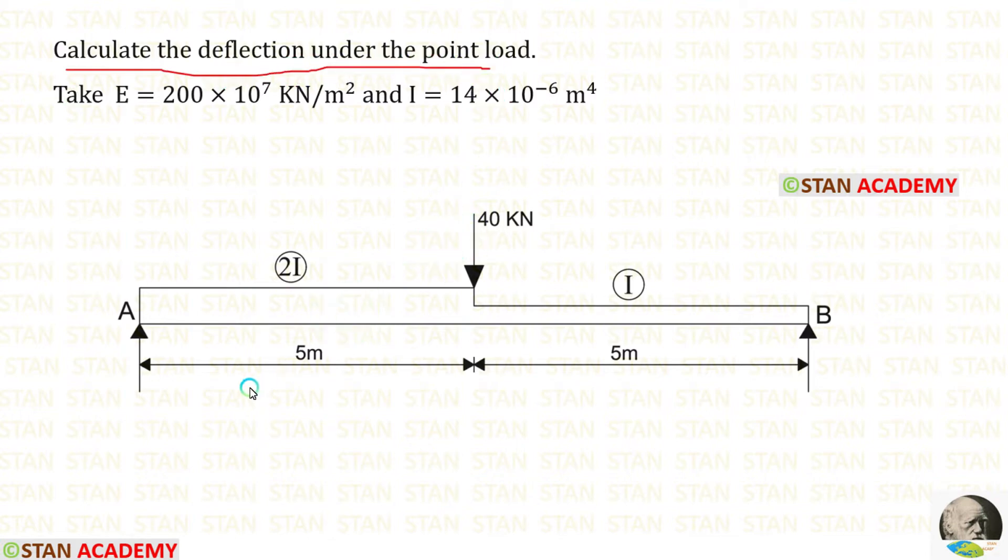A simply supported beam is given. The beam is carrying 40 kN point load on the center. Under this point load, we have to calculate the deflection. The total length of the beam is 10 meter. For the first half, 5 meter, the moment of inertia is 2i. For the second half, 5 meter, the moment of inertia is i.